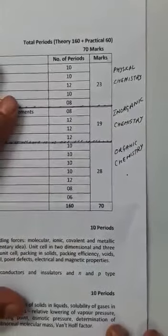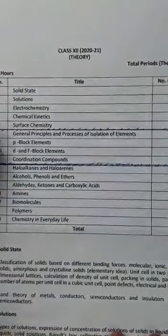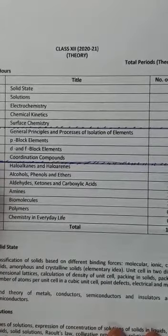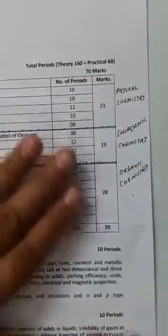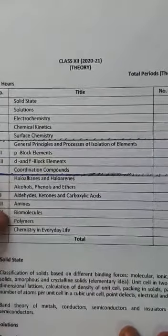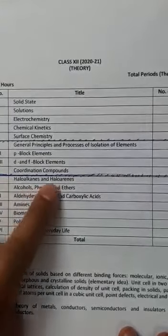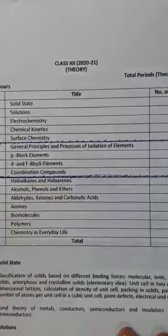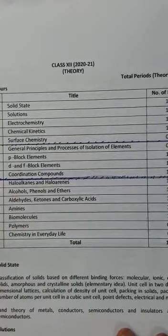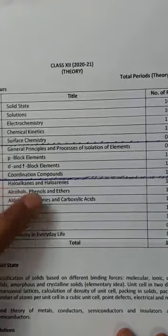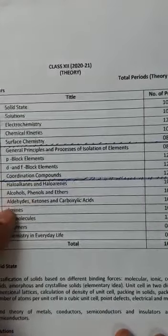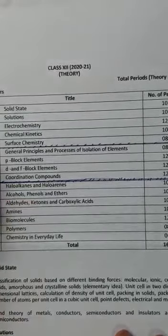One thing I want to tell you: whenever you start preparing for any subject, you should see which chapters are of one type and are related. Here in chemistry there are sections, so it is better if you want to start organic — complete the organic portion first, because these chapters are interrelated. If you see the syllabus: haloalkanes, haloarenes — in 11th standard you studied alkanes, alkenes, alkynes. Based on those, haloalkanes and haloarenes are also related. Alcohols, aldehydes, amines — these are all related.